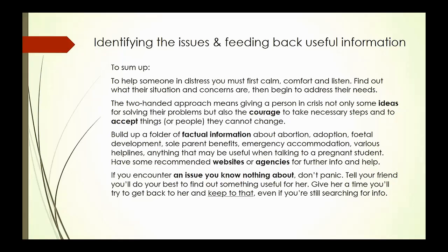Sometimes an egg or sperm cell doesn't divide right and results in an extra chromosome. Depending on which chromosome, the effects can be devastating — they may not survive to birth. Others, like Down syndrome, those individuals can be quite functional members of society, yes with some challenges, but they can be wonderful members of society. Genetic things can be picked up by amniocentesis around the middle of pregnancy.